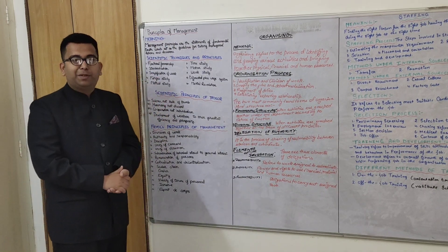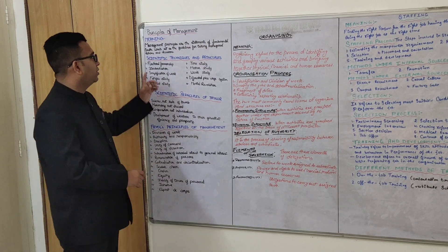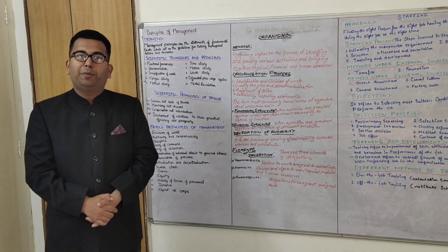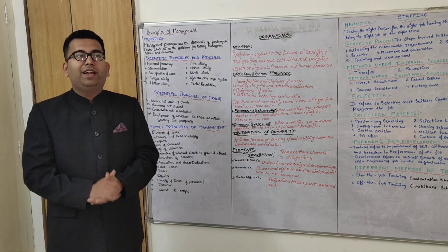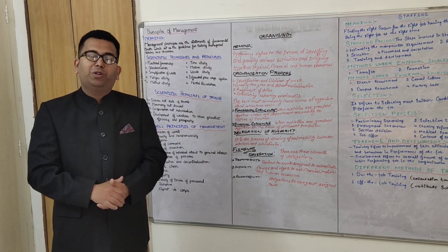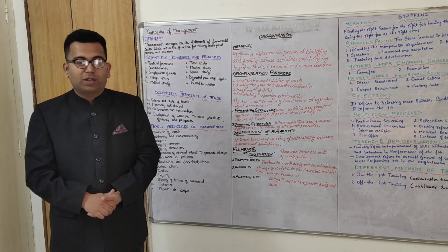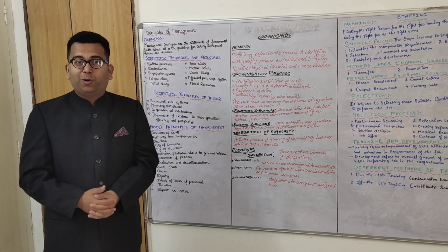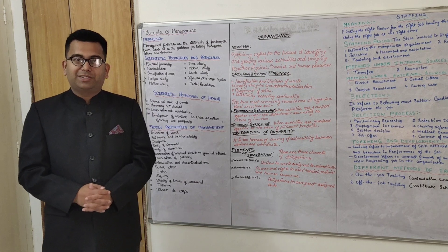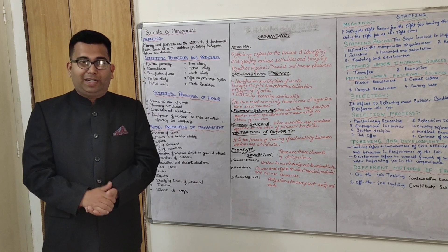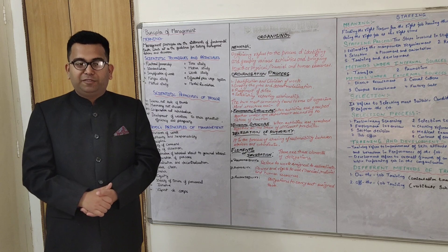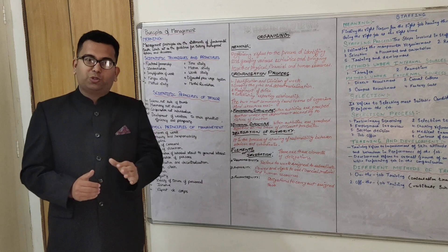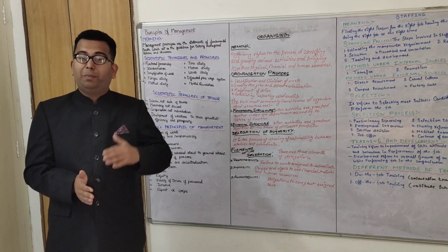Some of the scientific techniques and principles of Taylor are as follows. First is functional foremanship: the total work is divided into four departments with several heads, and it is an extension of Fayol's principle of division of work. Second is standardization — similar to setting up standards in the controlling chapter. When we want work to be simplified, we first decide a standard of quality, quantity, and size to achieve.